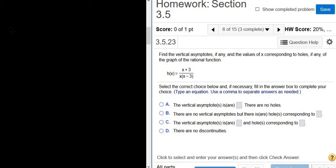In this problem, we have to find all vertical asymptotes and holes, if any, of the following rational function. So h(x) equals x plus 3 over x times (x minus 3).